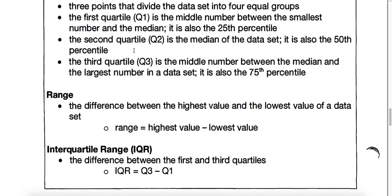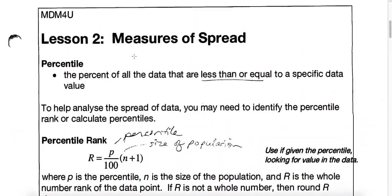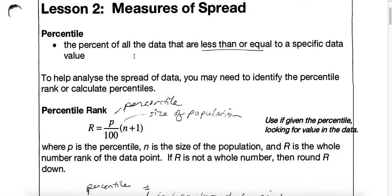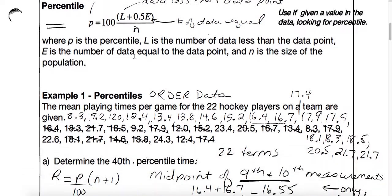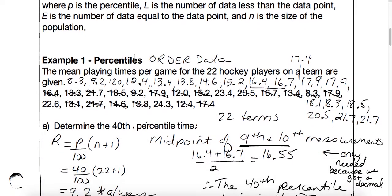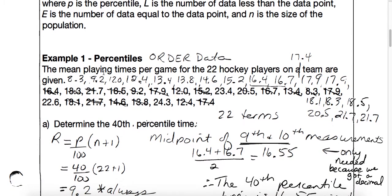what we were looking at — this is just an example from lesson two — we were looking at one-variable data. We did this example with the mean playing times per game of 22 hockey players. These are times showing how many minutes they played. The only variable we're looking at here is time, playing time. That is only one variable.